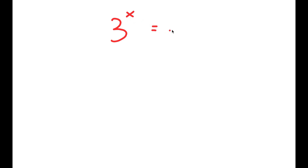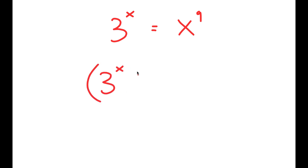In this video, I'm going to solve the equation 3 to the power of x is equal to x to the power of 9. To solve this, I'm going to first take the power of 1 over x on both sides.